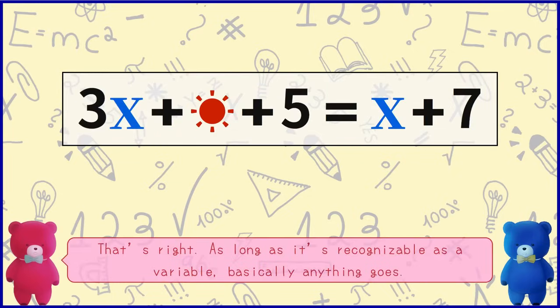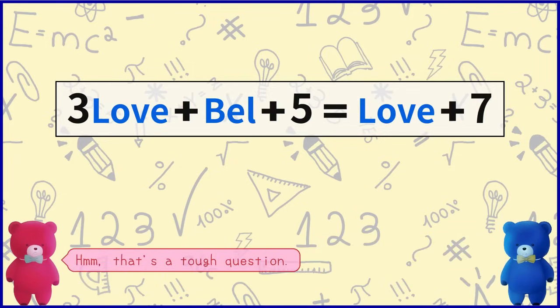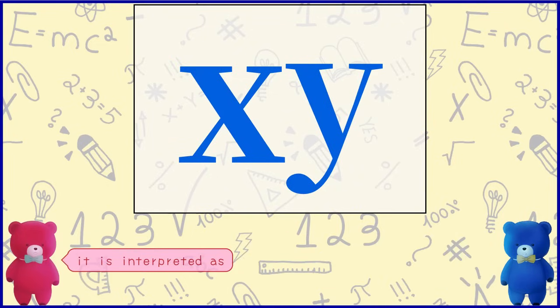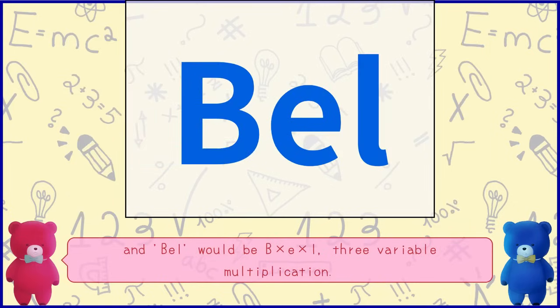That's right. As long as it's recognisable as a variable, basically anything goes. But is everyone okay to set several characters like 'love' or 'bel' as one variable? When multiple characters are written consecutively like this, it is interpreted as multiplication. So 'love' would be L times O times V times E — four variable multiplication. And 'bel' would be B times E times L — three variable multiplication.